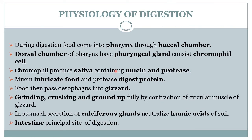The next part is the physiology of digestion. During digestion, food comes into the pharynx through the buccal chamber. The dorsal chamber of the pharynx has pharyngeal glands containing chromophil cells that secrete mucin and protease. The mucin lubricates the food while the protease digests the protein. Then the food passes into the esophagus and from the esophagus into the gizzard, where the circular muscles and the inner lining of thick cuticle grind and crush the food.